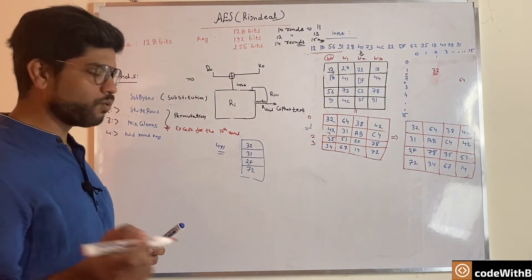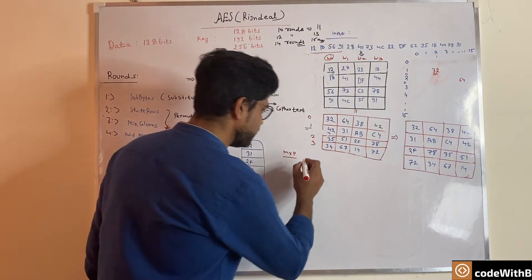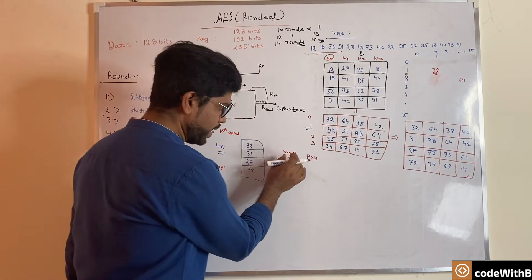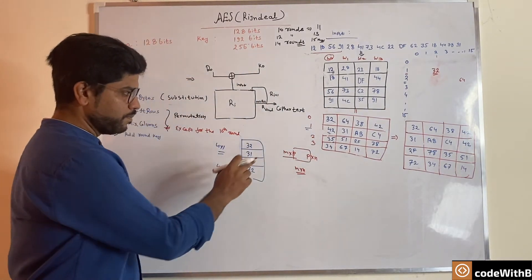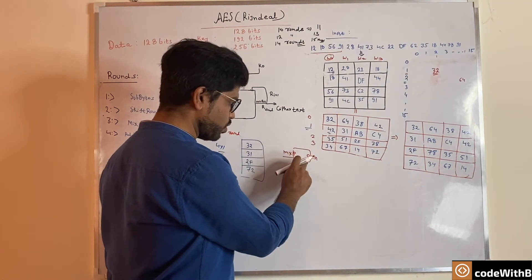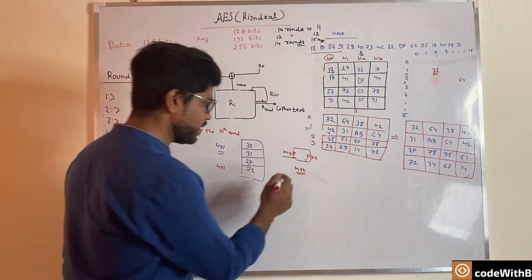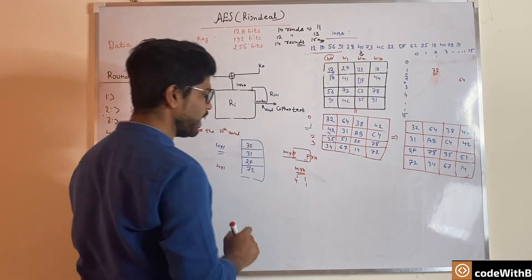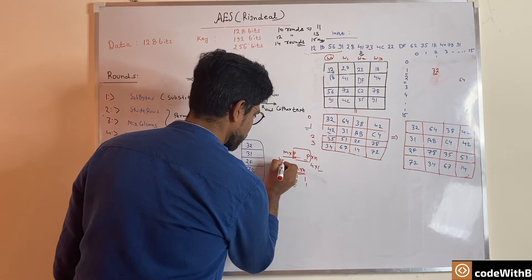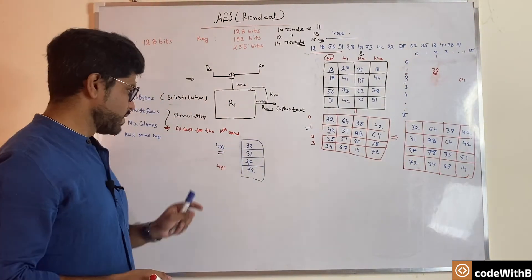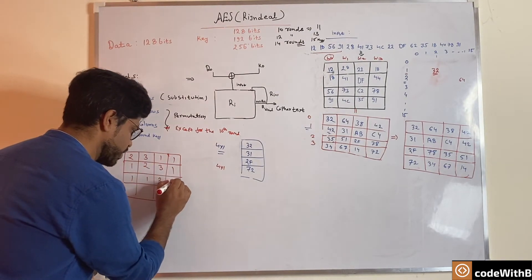The input is a 4×1 matrix and we need an output of 4×1. For matrix multiplication the rule is: an M×P matrix multiplied by a P×N matrix gives an M×N result, with P being common. So since we need 4×1 output and have a 4×1 input, we need a 4×4 matrix. That 4×4 matrix is a fixed-value matrix: [2, 3, 1, 1 / 1, 2, 3, 1 / 1, 1, 2, 3 / 3, 1, 1, 2].